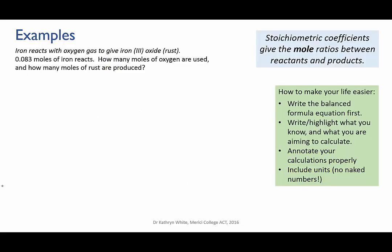All right, let's try one last problem. Again, try pausing the video to give this a go before you watch me working it out. We're going to look at the reaction in which iron reacts with oxygen to give iron three oxide, which you're familiar with as rust. So first, let's write and balance the equation. And now what do we know? We're told that we have 0.083 moles of iron.